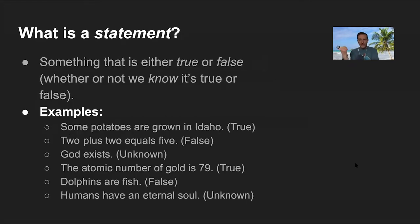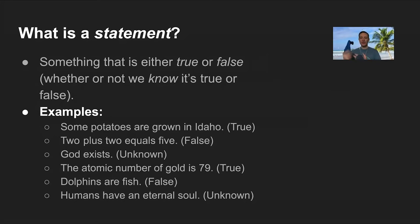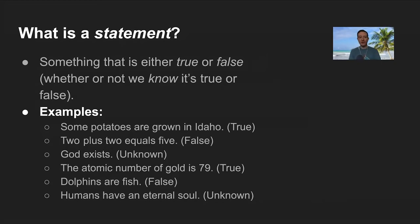Since arguments are made of premises, it's important to think about what statements are. A statement has a truth value — it's something that's either true or false. A statement can be true or false whether or not we know it. Some statements are statements because they are true or false, even if we don't know their truth value. Here are some examples of different kinds of statements — some true, some false, some we don't know.